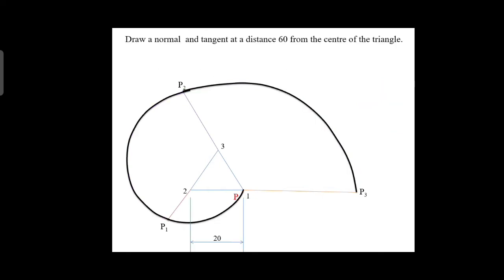In this same problem, we are going to discuss how to draw a normal and tangent. Draw a normal and tangent at a distance 60 mm from the center of the triangle. First, locate the center of the triangle — that point is O. With O as center and 60 mm as radius, draw an arc on the involute curve. The intersecting point is M. Join P and M and extend the line — this is the normal line. Then draw a perpendicular line to the normal — that is the tangent line TT dash.